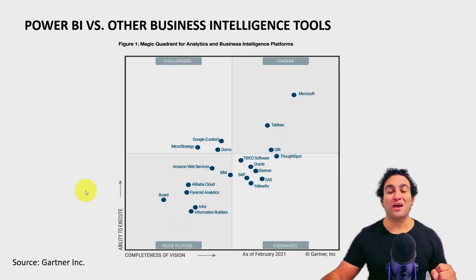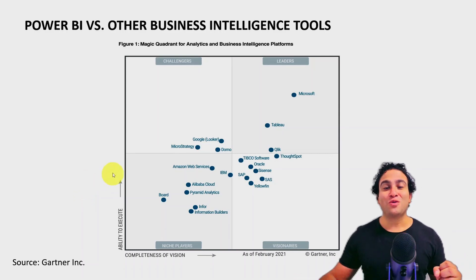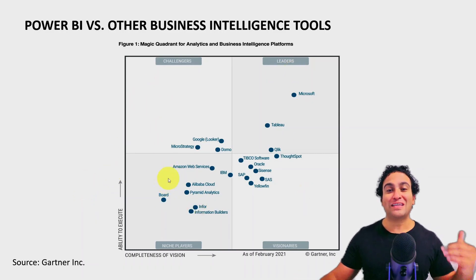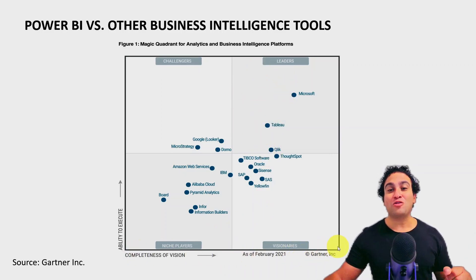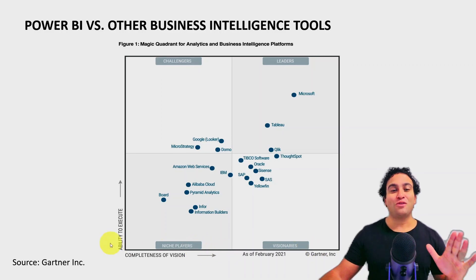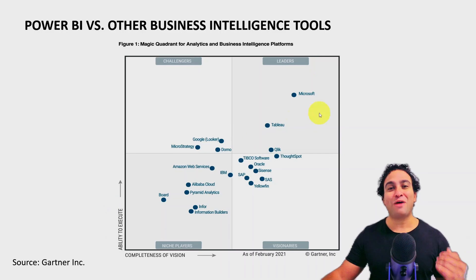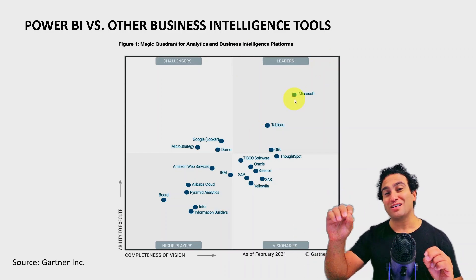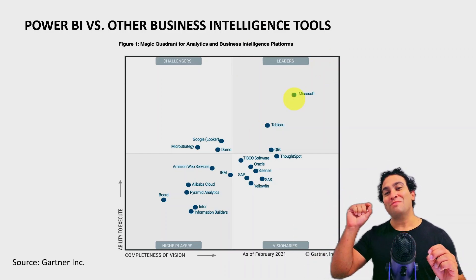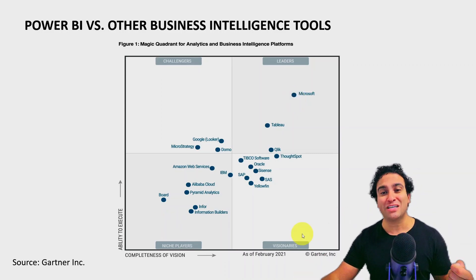The next question is: what is Power BI compared to other business intelligence tools? This is what we call the Magic Quadrant for analytics and business intelligence platforms. On the x-axis, that's the completeness of vision, and on the y-axis, this is the ability to execute. What you notice here is that Power BI and Microsoft are in the leaders quadrant, meaning it's one of the best tools to learn, and one of the most developed tools from an execution and vision standpoint.